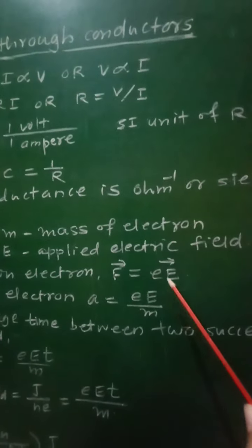Rearranging, we get E = J × M / (ne²t). This can be written as E = ρ × J, where ρ = M / (ne²t) is called the resistivity of that material. Since M, n, e, and t are all constants for a given material, the resistivity ρ is constant. Therefore, for a given material the resistivity is always constant.